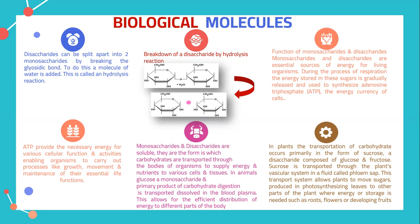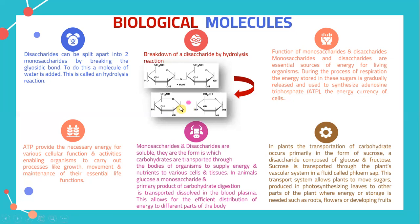This transport system allows plants to move sugars produced in photosynthesising leaves to other parts of the plant where energy or storage is needed, such as roots, flowers, or developing fruits.